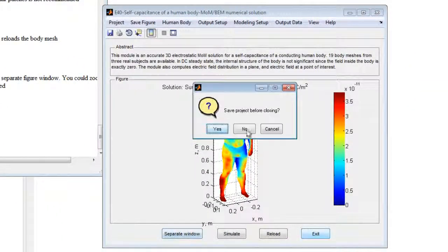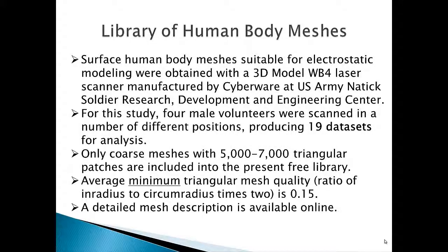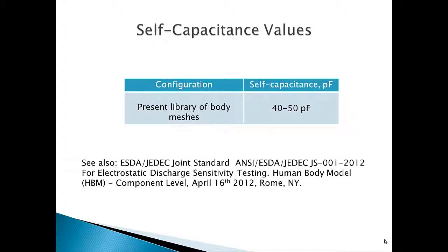When exiting the program, the current configuration can be saved for later use and easily reloaded. The library of outer human body shapes includes 19 meshes from four persons, which describe different dynamic positions. While the fidelity of each mesh is limited in this release, mesh elements of high quality are produced. The self-capacitance values for the different meshes all fall within the range of 40 to 50 pF.